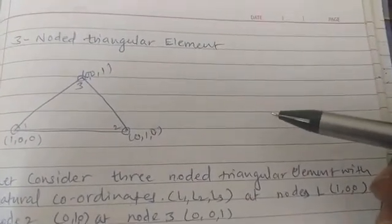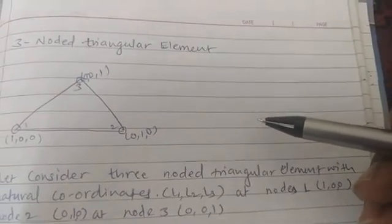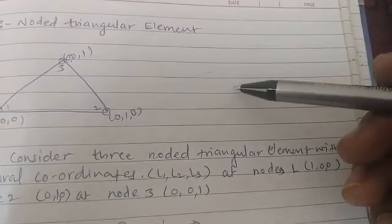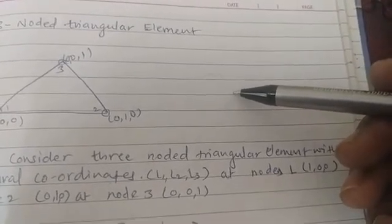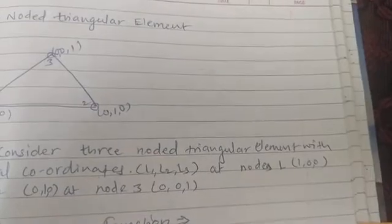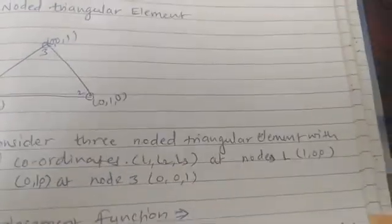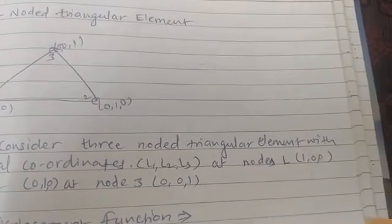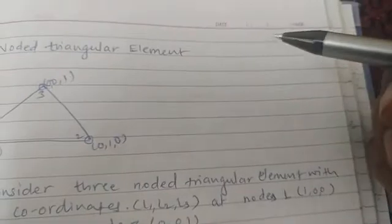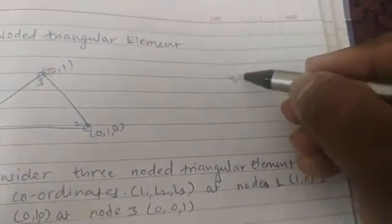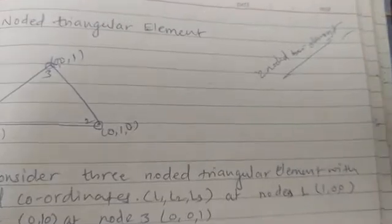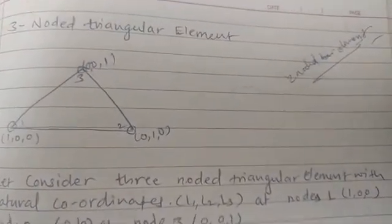Welcome friends. Till now we have discussed the finite element method. In this chapter we have discussed the introductory terms, shape functions, and the steps for solving a structure by finite element analysis. We have also discussed the elements and approaches used in finite element analysis. In the last video we discussed how to find the shape function for a two-noded bar element. In this video we will take one more example on shape function.